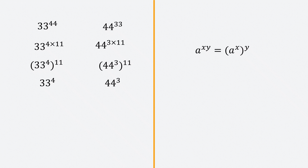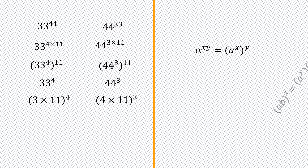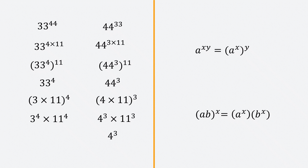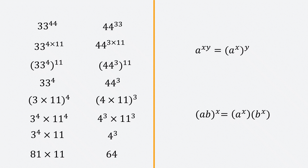At this point it follows the same steps as before. Write 33 as 3 times 11 to the power 4, and 44 as 4 times 11 to the power 3. Distributing the powers: 3 to the power 4 times 11 to the power 4 on the left, and 4 to the power 3 times 11 to the power 3 on the right. Dividing through by 11 cubed, I have 4 to the power 3 on one side and 3 to the power 4 times 11 on the other. 3 to the power 4 is 81 times 11, and 4 to the power 3 is 64 — clearly 81 times 11 is bigger than 64.